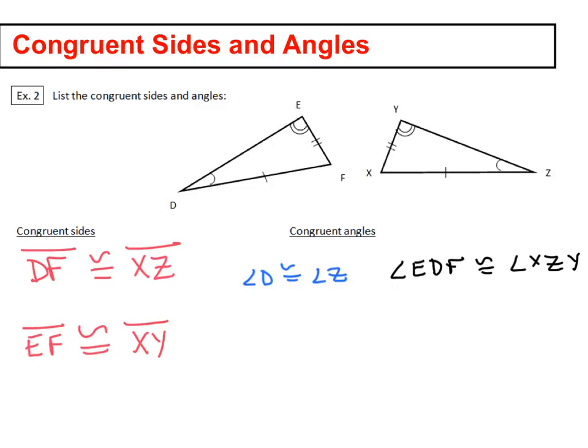But again, I'm just kind of showing you everything. Now the second one, we could say, oh yep, here's our two curves. That's angle E is congruent to angle Y. So we could say angle E is congruent to angle Y.